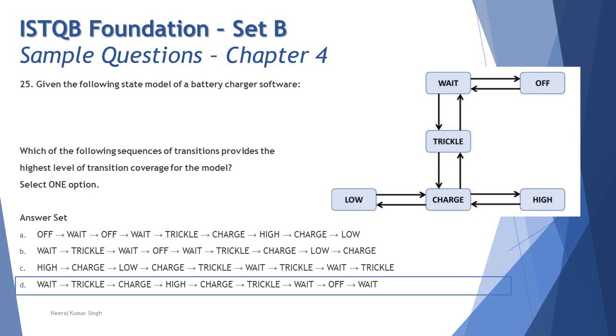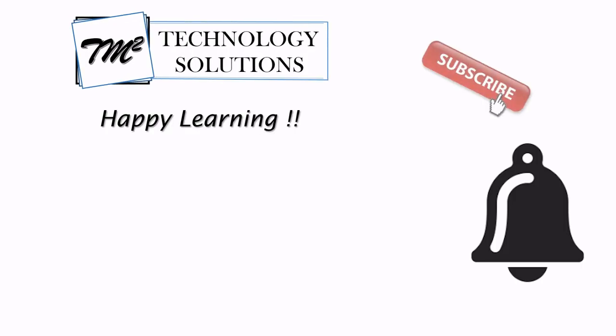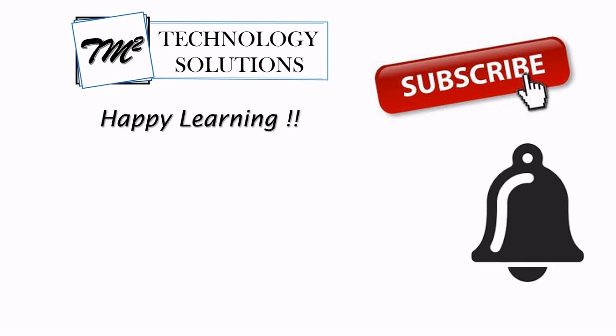Putting it all together, the right answer here would be D: Wait to Trickle, Trickle to Charge, Charge to High, High to Charge, Charge to Trickle, Trickle to Wait, Wait to Off, Off to Wait covers eight transitions out of 10. This is how you need to make your job simpler and just figure out what you really need to pick up in order to get to the right conclusion and the correct answer. That's all from this particular tutorial, team. We'll be getting back to you with remaining questions of this chapter in our next tutorial. Till then, keep learning, keep exploring, keep understanding the context. Should you have anything else, feel free to drop me a comment. I'm always there to address your queries. Take care team and happy learning. See you next time.